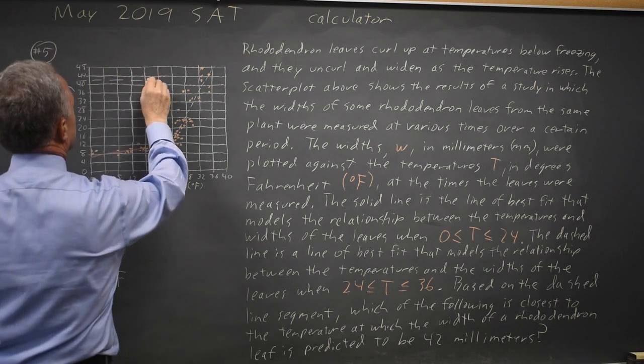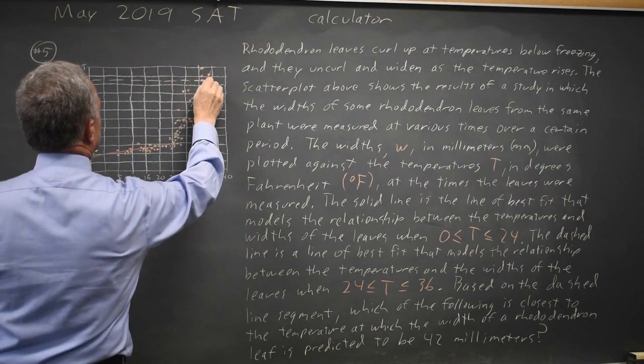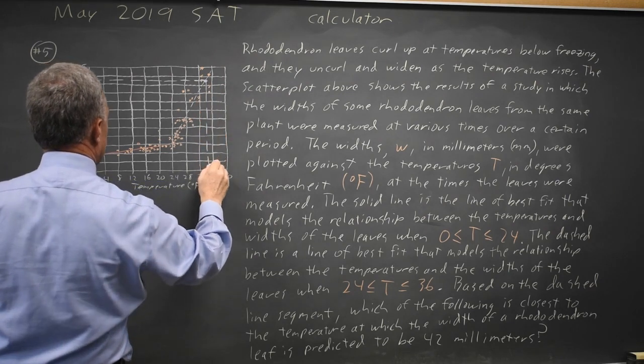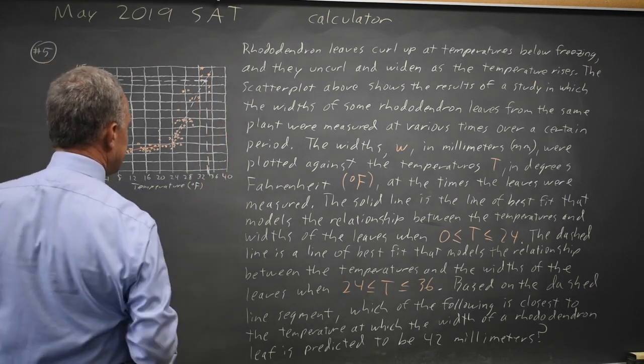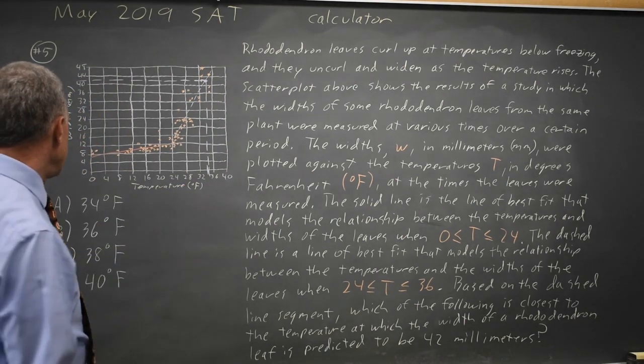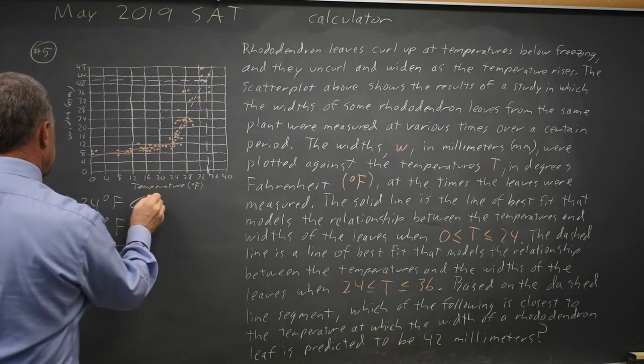So that would be this point coming downward, and you can draw on your test, and I certainly would. It's halfway between 32 and 36, which would be 34 degrees Fahrenheit.